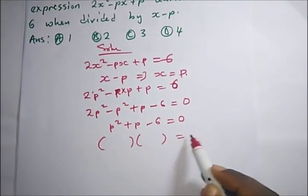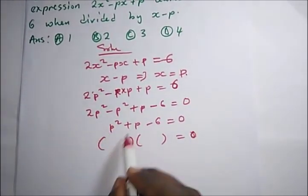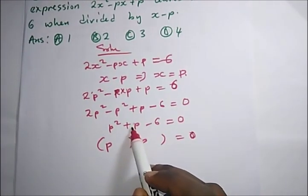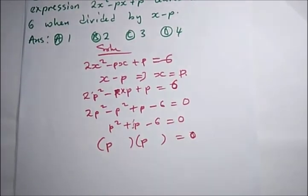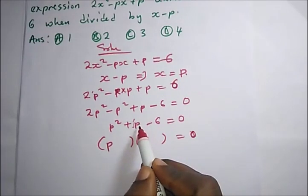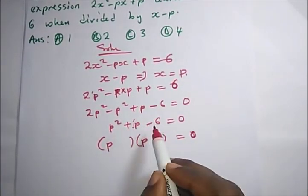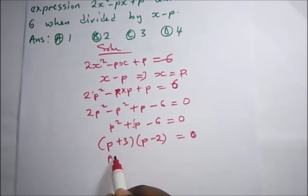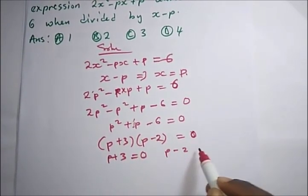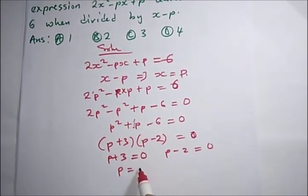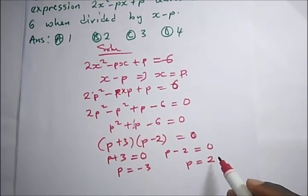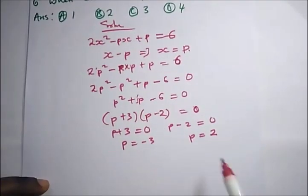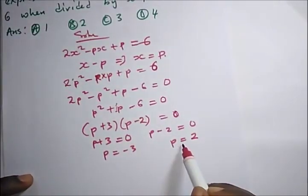We now factorize P² + P − 6 = 0. We need factors of 6 that add to give 1: that's +3 and −2. So (P + 3)(P − 2) = 0, giving P = −3 or P = 2. Since the question asks for the positive value, P = 2. The correct option is B.